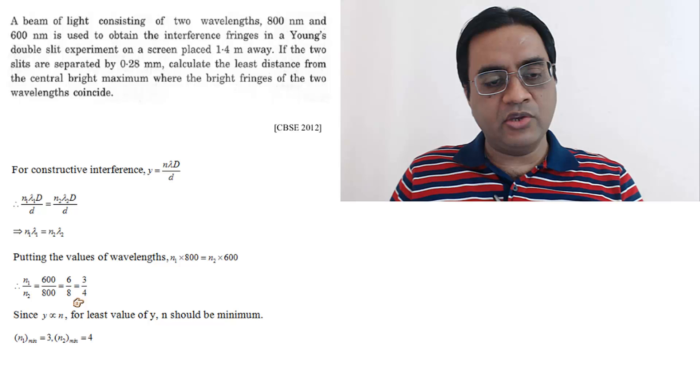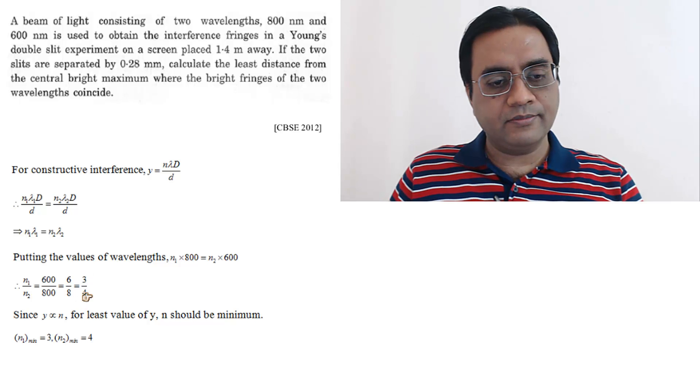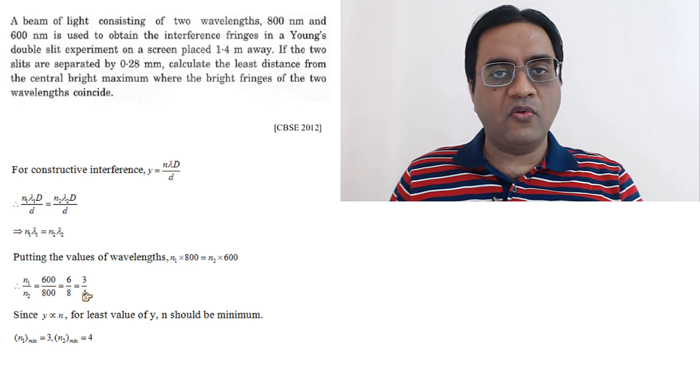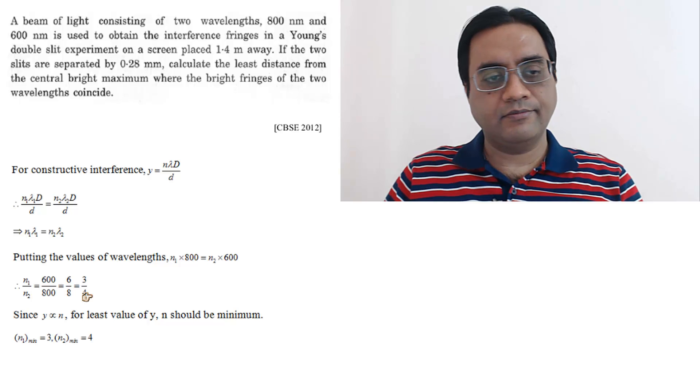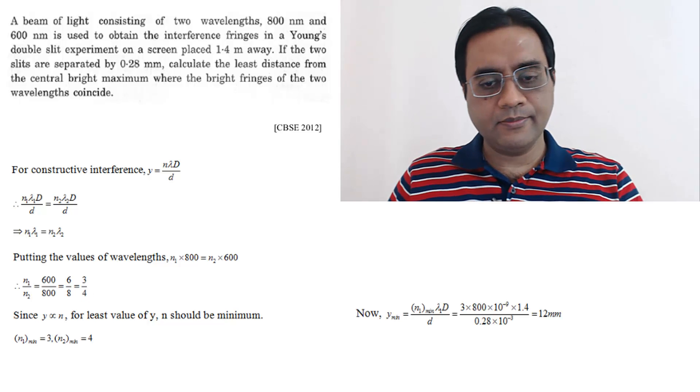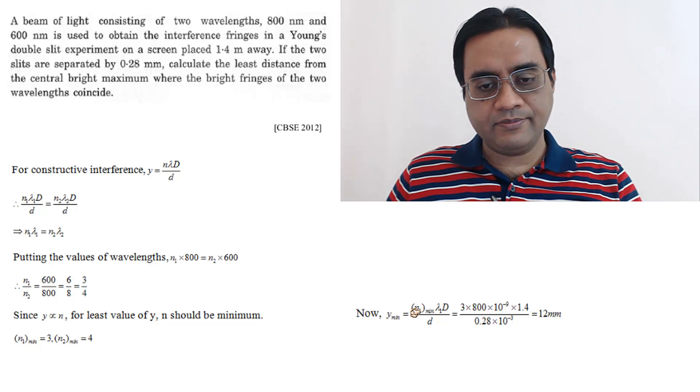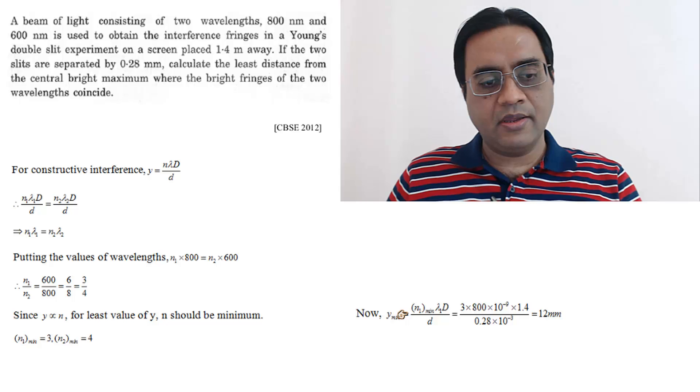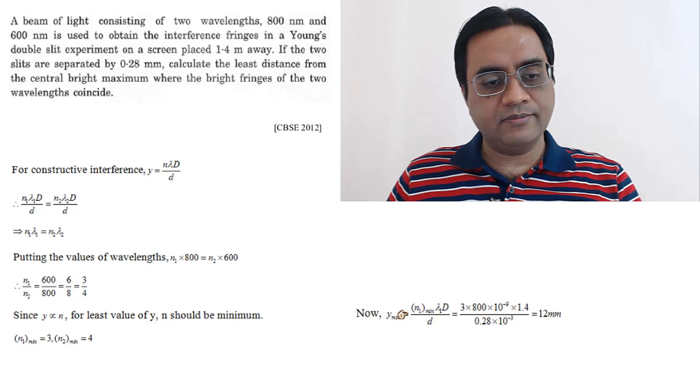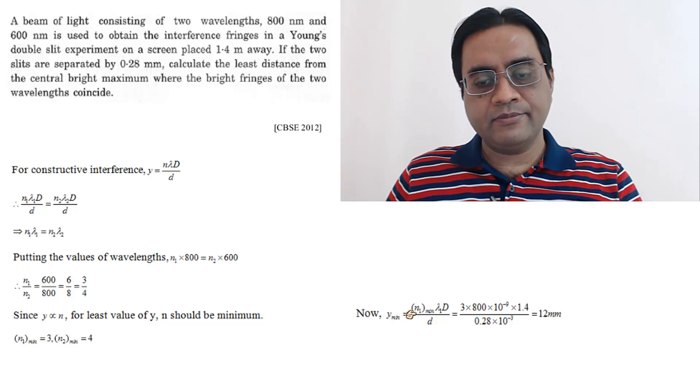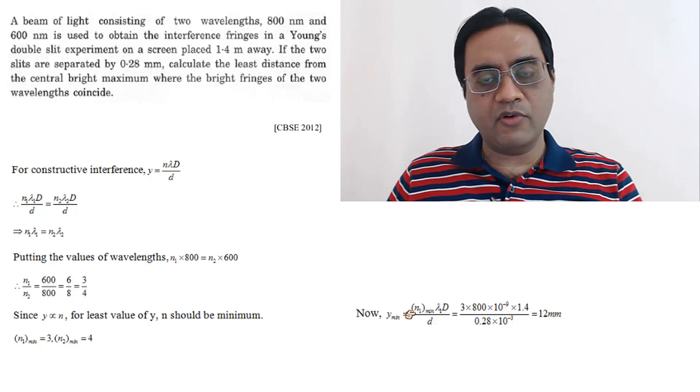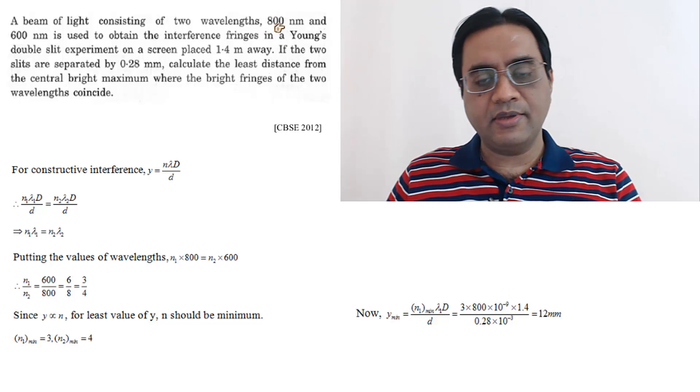Therefore, we can use either of the two to find y minimum. Y minimum will be this. Here I have used the minimum value of n1, that is 3, and therefore lambda would be 800 nanometers.